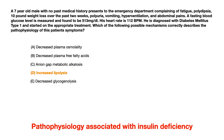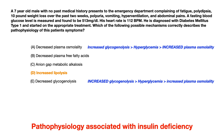Let's look at answer choices A and E because they are very much related. Answer choice A says decreased plasma osmolality and answer choice E says decreased glycogenolysis. What's actually happening in an insulin deficient state is that you get increased levels of glycogenolysis. So right off the bat, we can eliminate answer choice E. When there's no insulin, the body thinks it needs to increase glycogenolysis — this is abnormal, and it occurs because insulin cannot be secreted, as is the case in type 1 diabetes due to autoimmune destruction of those islet cells.